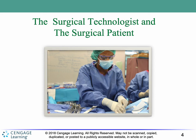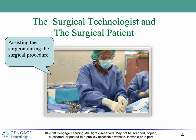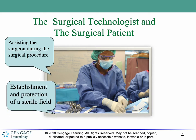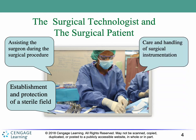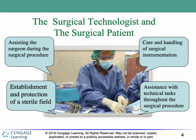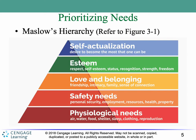Let's dive in by talking about the surgical technologist in relationship to the surgical patient. In previous lectures, we talked about the primary roles of the surgical technologist. Maslow's Hierarchy of Needs is a model of human development developed by Abraham Maslow in 1968, and then tweaked a little bit in 1971.